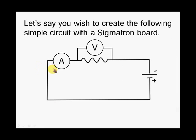So let's set out in creating the following circuit: a simple series circuit with an ammeter, a voltmeter connected in parallel to a resistor, and a power source with a positive and negative terminal.